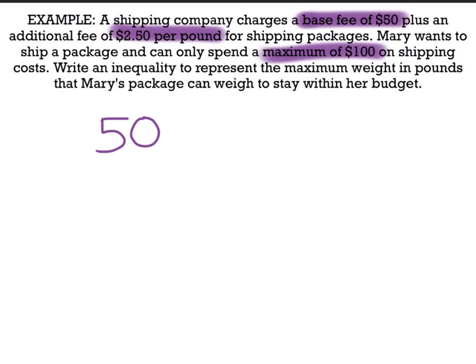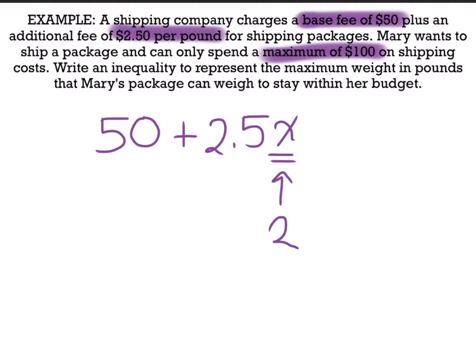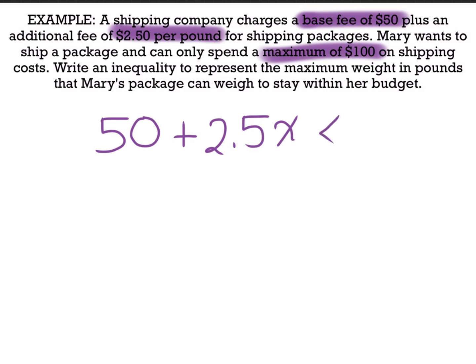Additionally, we have to increase by $2.50 for each pound, so multiplied by the number of pounds. Since we don't know what that is, we write that as x. If we had 1 pound, that's 1 × 2.5 = 2.5; 2 pounds would be 2 × 2.5. So we're increasing $2.50 for every additional pound — that's why we multiply by x. This is the price she pays for x pounds, and we want to make sure this price does not exceed $100, so this whole expression needs to be less than or equal to $100.